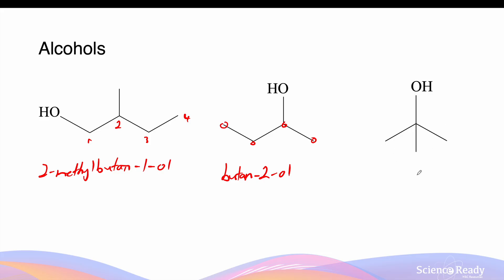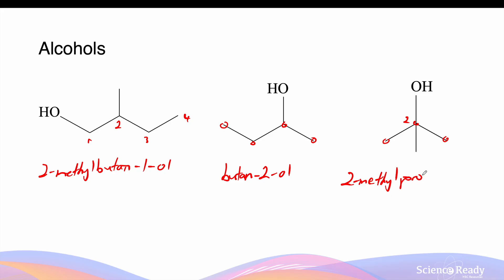For our third one, this is a tertiary alcohol. We can tell because the alcohol group lies on a saturated carbon atom, meaning that the carbon has created as many bonds as it can — which are 4. Our longest chain length is 3: 1, 2, and 3. Since the methyl group and the alcohol group both lie on carbon number 2, we are going to call this 2-methyl-propan-2-ol.